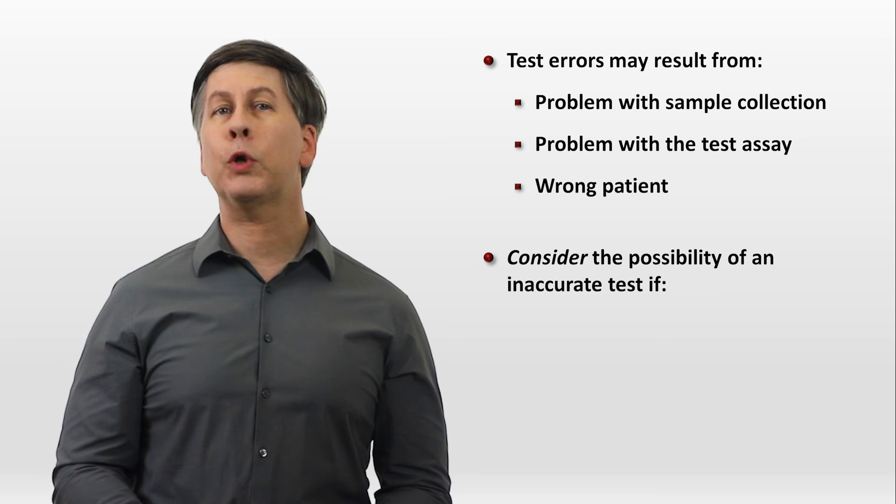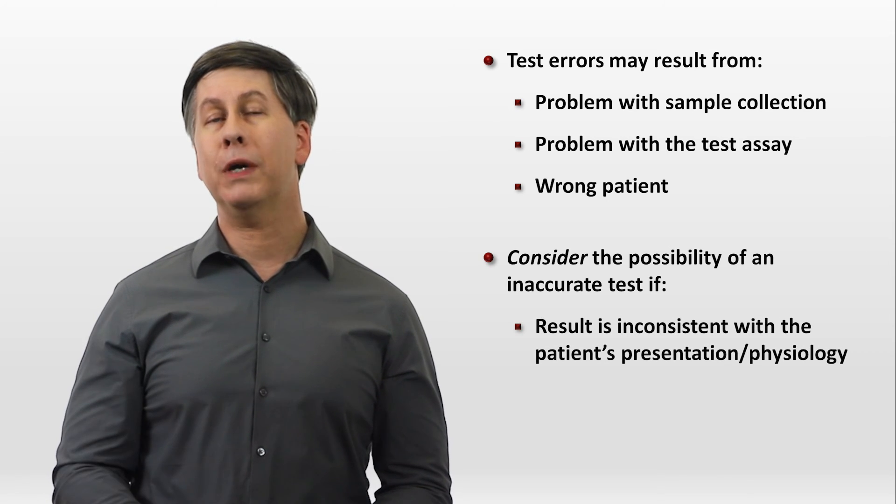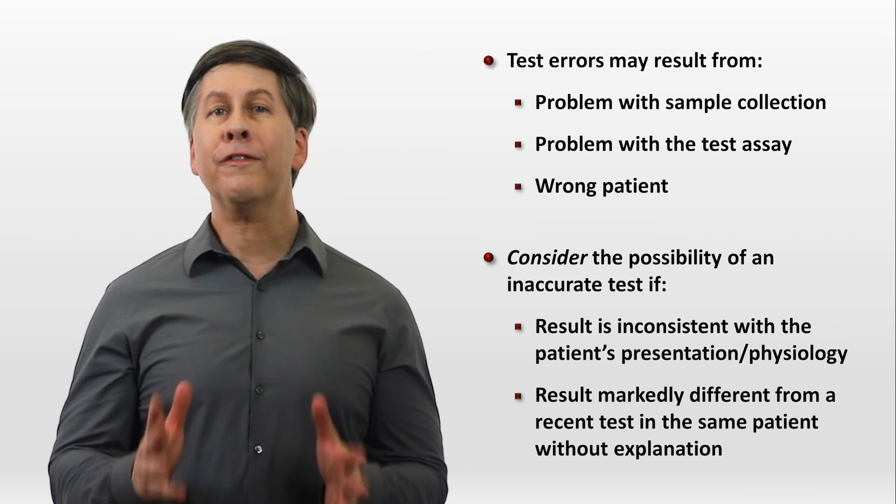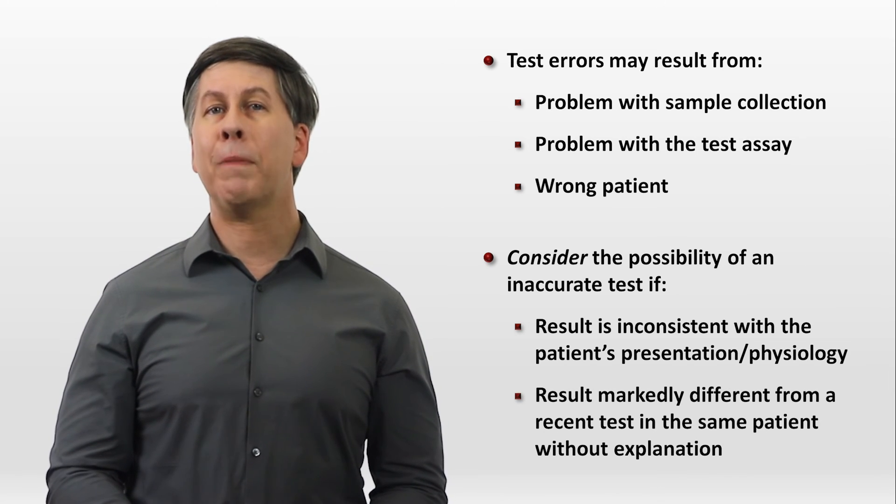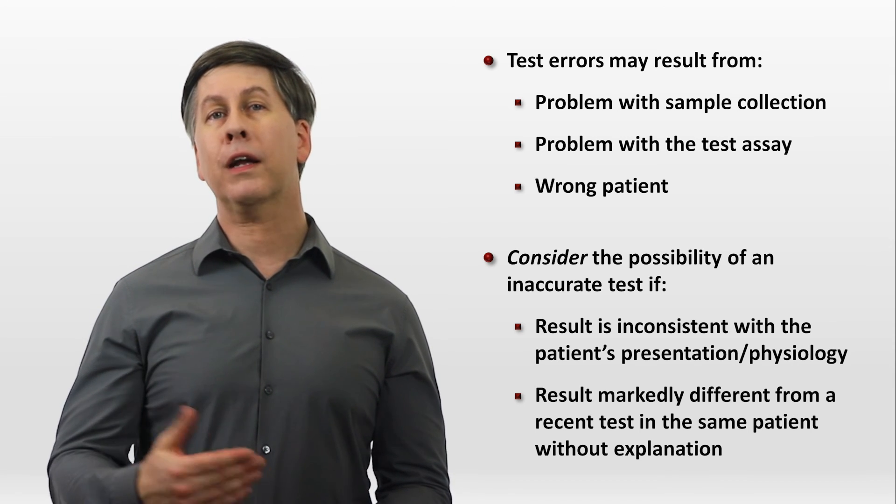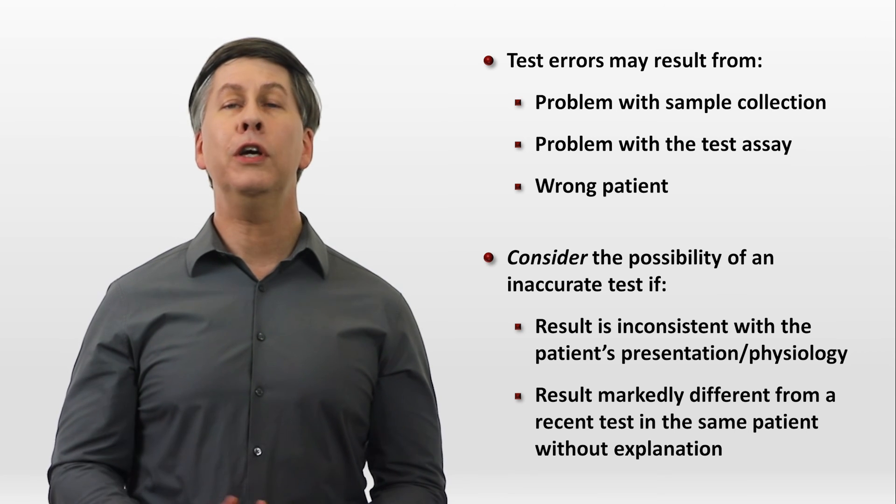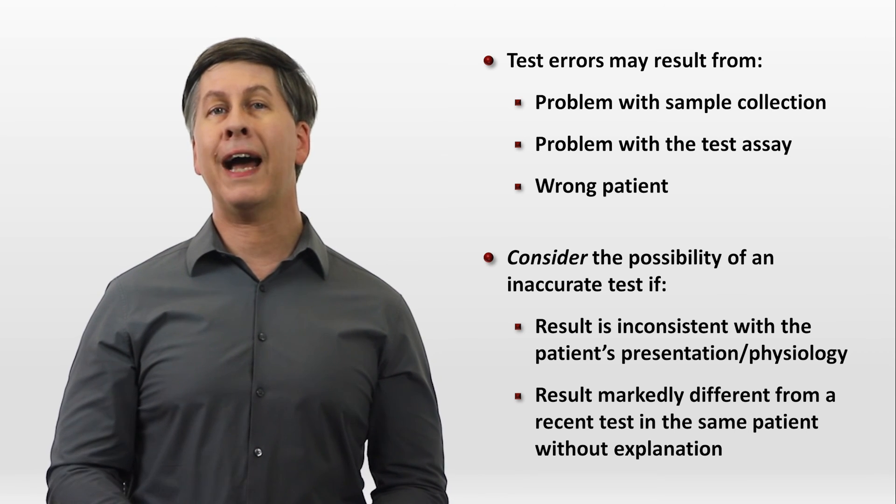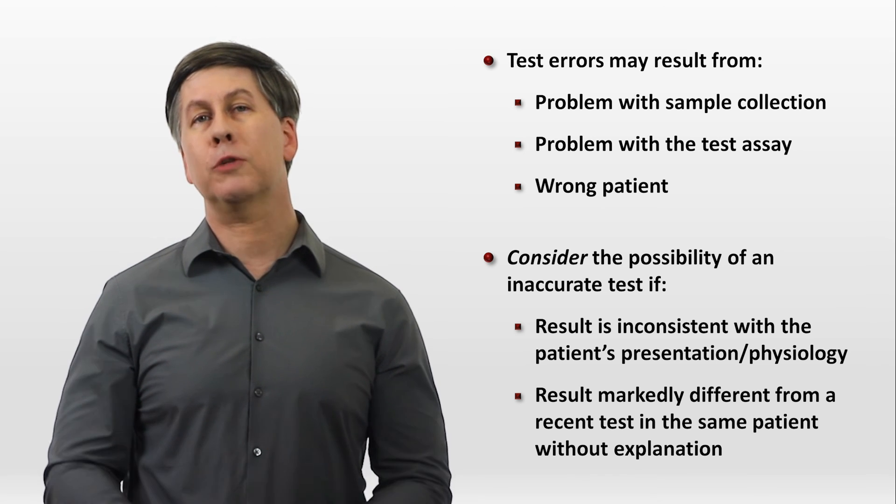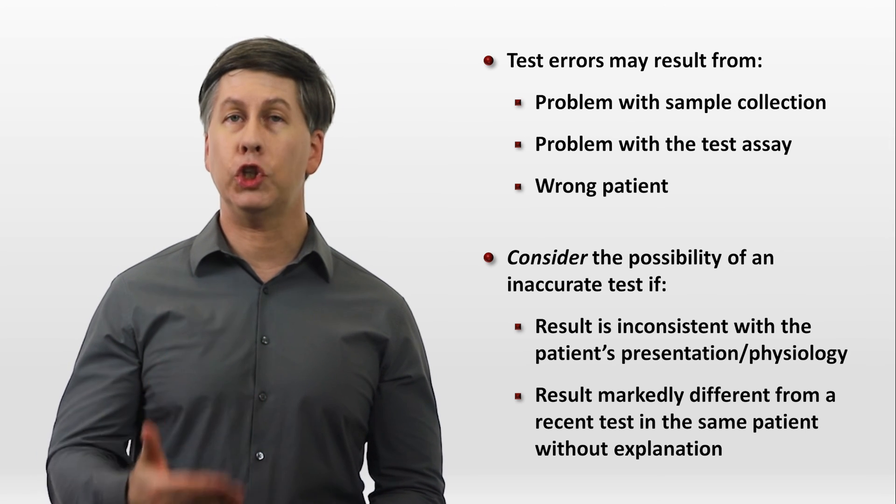A clinician should consider the possibility of an inaccurate test if either the result is inconsistent with the patient's presentation or physiology, or if the result is markedly different from a recent test in the same patient without explanation. For example, an asymptomatic hospitalized patient who is noted on their ECG to have a sudden dramatic shift in their QRS axis from one day to the next, that person's ECG probably has a limb lead transposition, that is, a mistake made by the person recording the ECG.